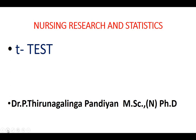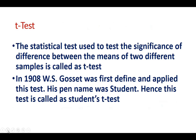Today we are going to see about t-tests. A t-test is a statistical test used to test the significance of the difference between the means of two different samples or groups. In 1908, W.S. Gossett first defined and applied this test. His pen name was Student, hence this test is called the Student's t-test.